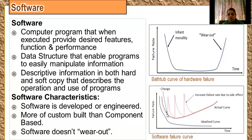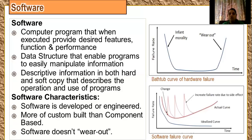When the failure rate decreases to a certain extent, there is a requirement for a change in your software. So you implement the change, deliver your product again, and failure rates spike high again. Then they start deteriorating with time. Before one error is fully solved, another change is requested every time. Therefore, your software will slowly deteriorate due to such continuous changes.